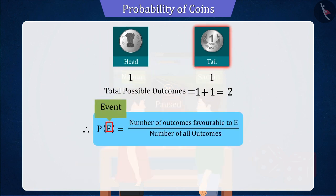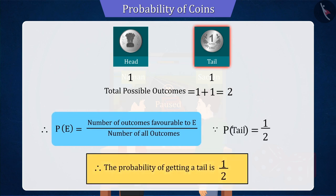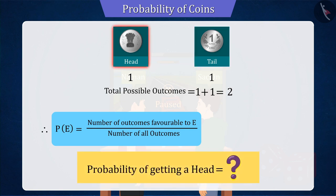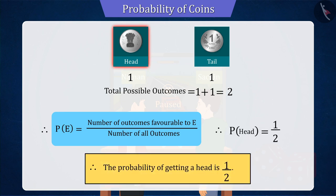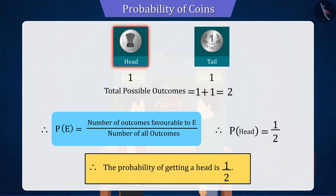The probability of event E is equal to the number of favourable outcomes of the event upon the number of all possible outcomes. Therefore, we can say that the probability of getting a tail will be 1 by 2. Can you now find the probability of getting a head? According to the above statement, the probability of head will also be 1 by 2, since the total number of results is 2 and the possibility of head is only 1.